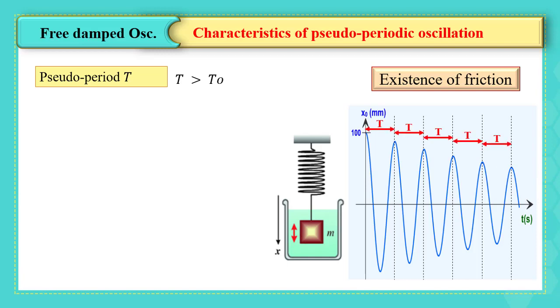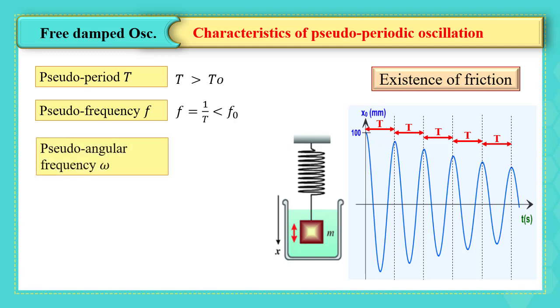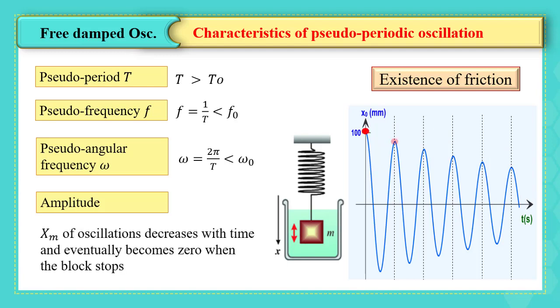Pseudo frequency F equals to 1 over T, so it is less than the proper frequency F0. Pseudo angular frequency omega. The amplitude of oscillations decreases with time and eventually becomes zero when the block stops.